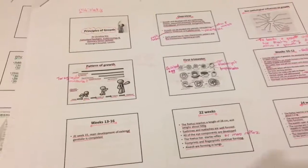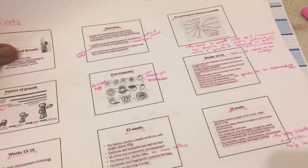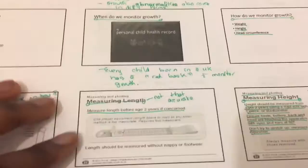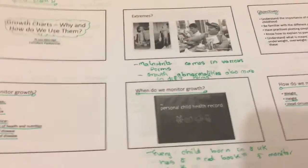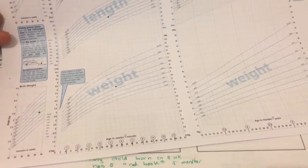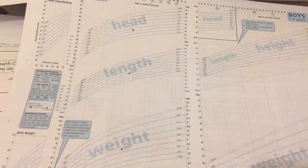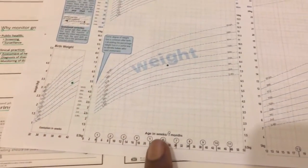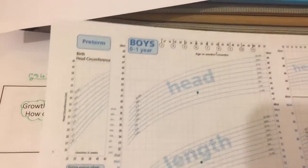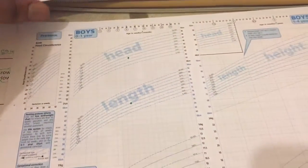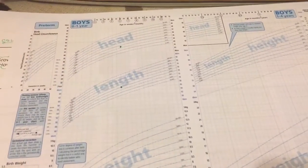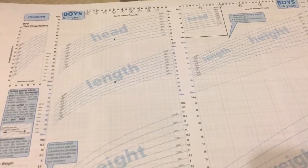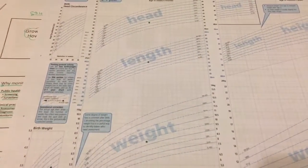I just finished going through the principles of growth lecture and now I'm going through growth charts and why they're useful. During this lecture the lecturer gave us these growth charts and made us plot some figures on there to help us understand how doctors monitor them. Down here you have age in weeks and months, on the side you have birth weight, head circumference up here, and length right here. This is what they use to monitor how well a child is growing and to identify any problems.